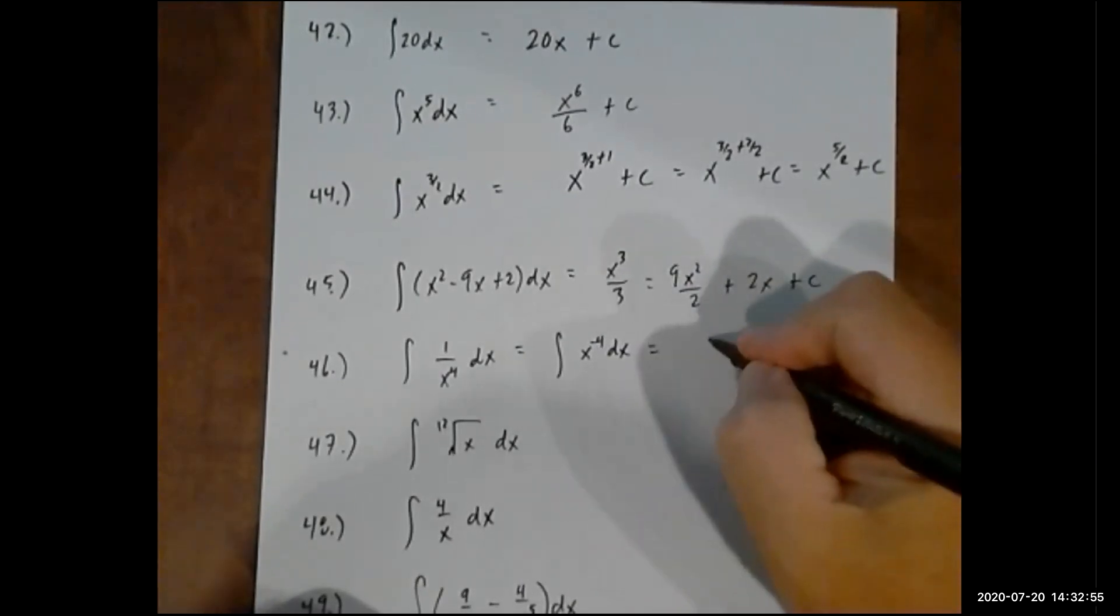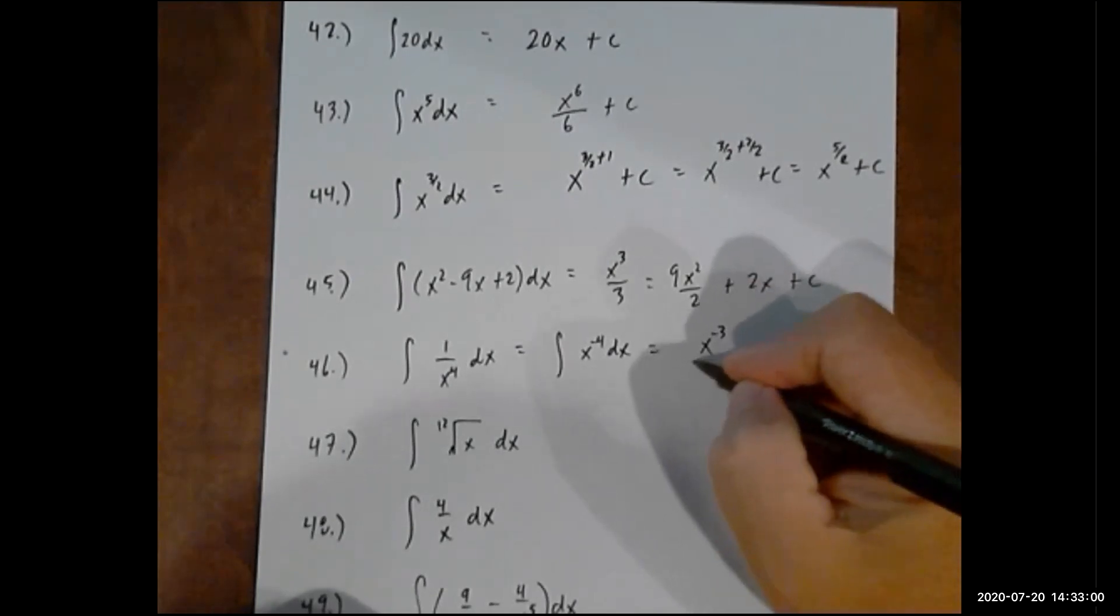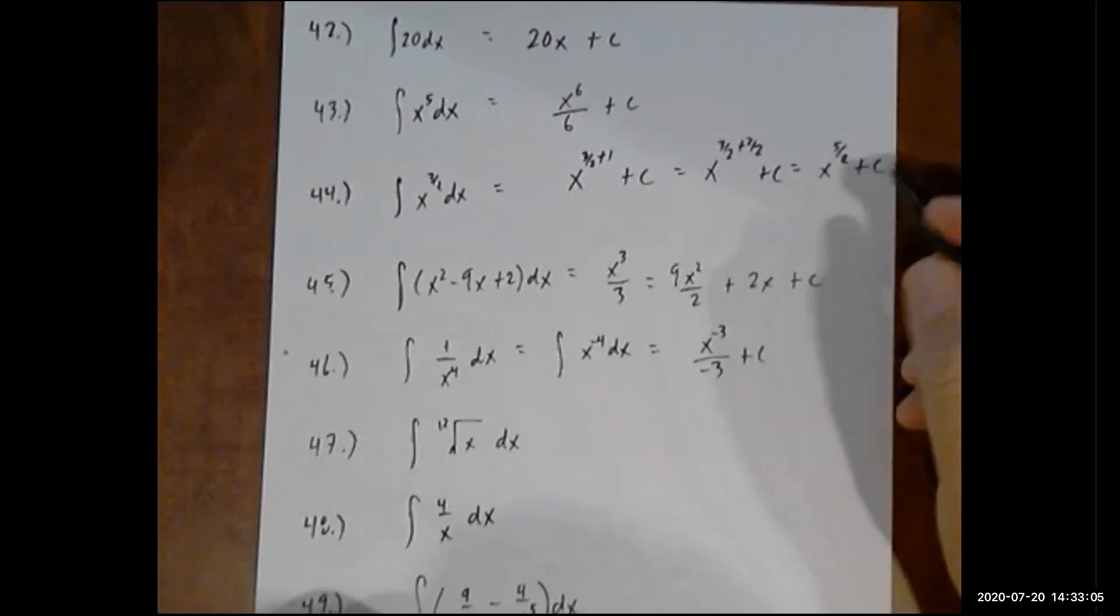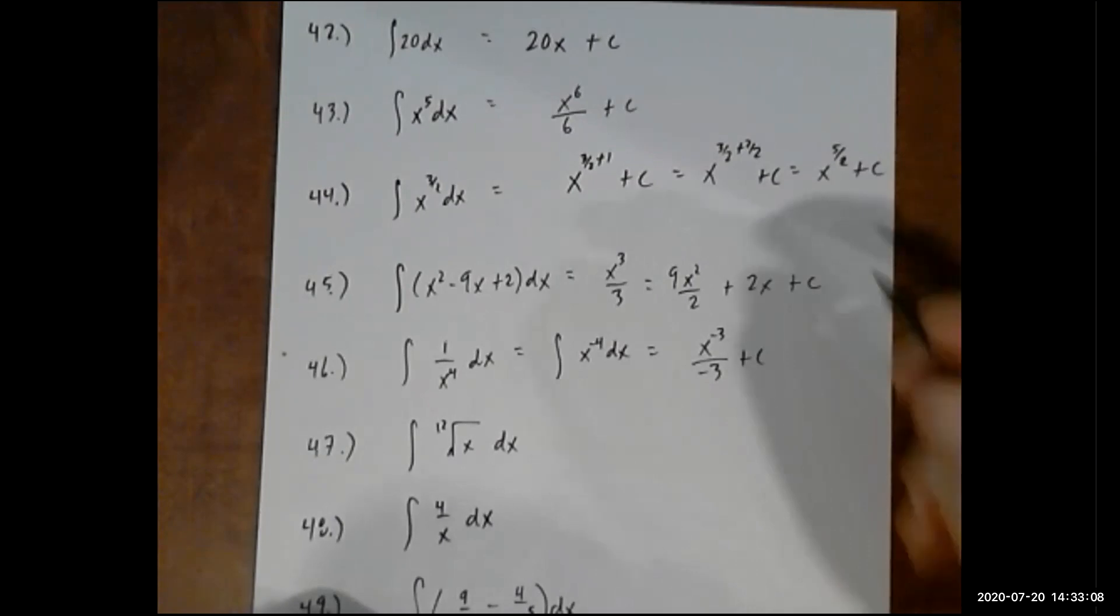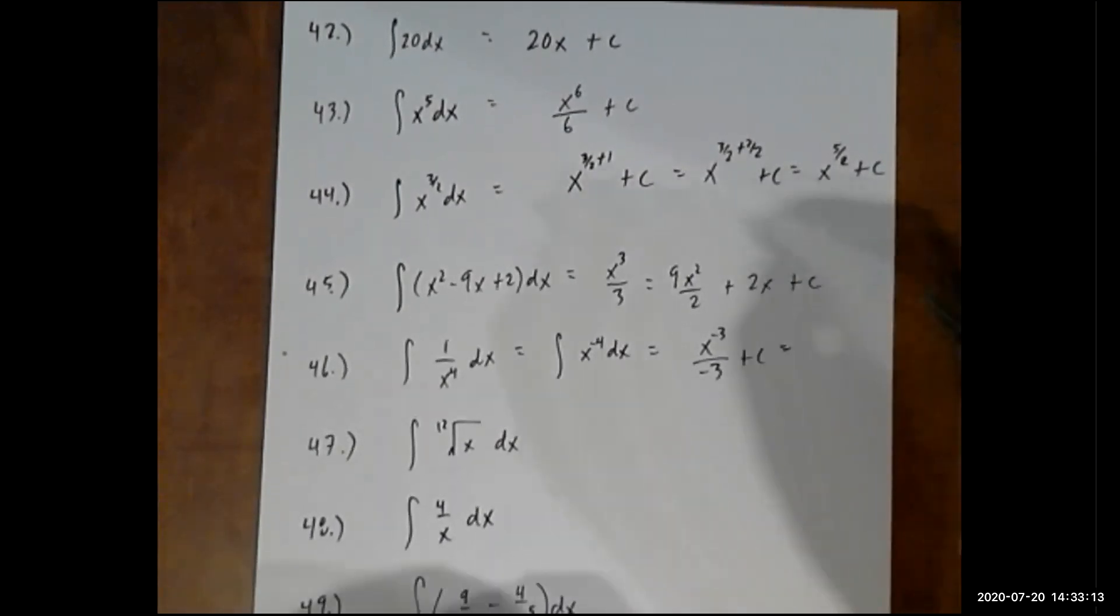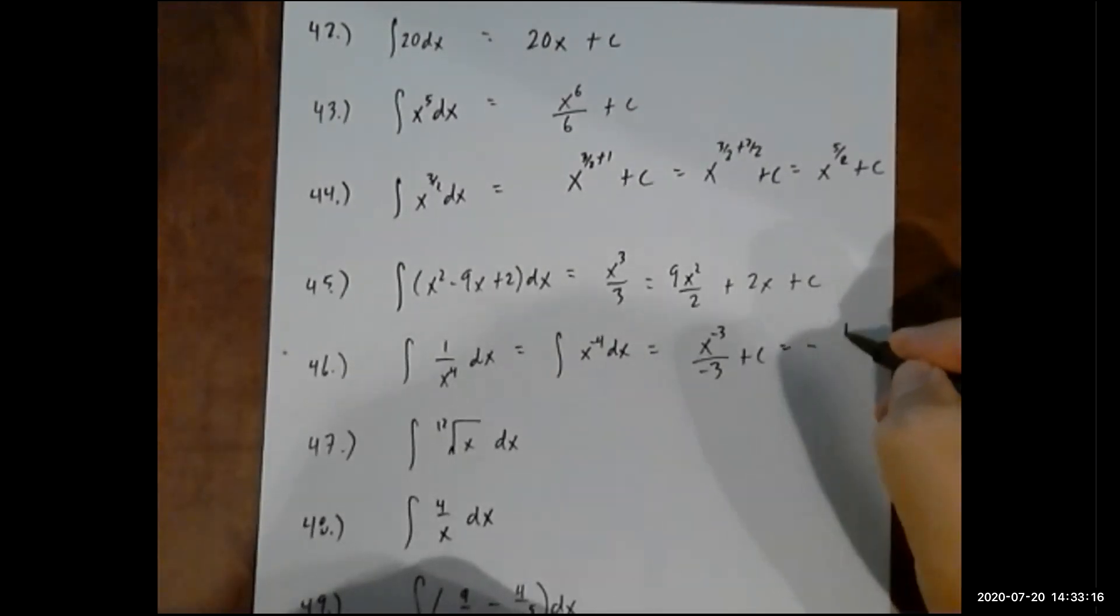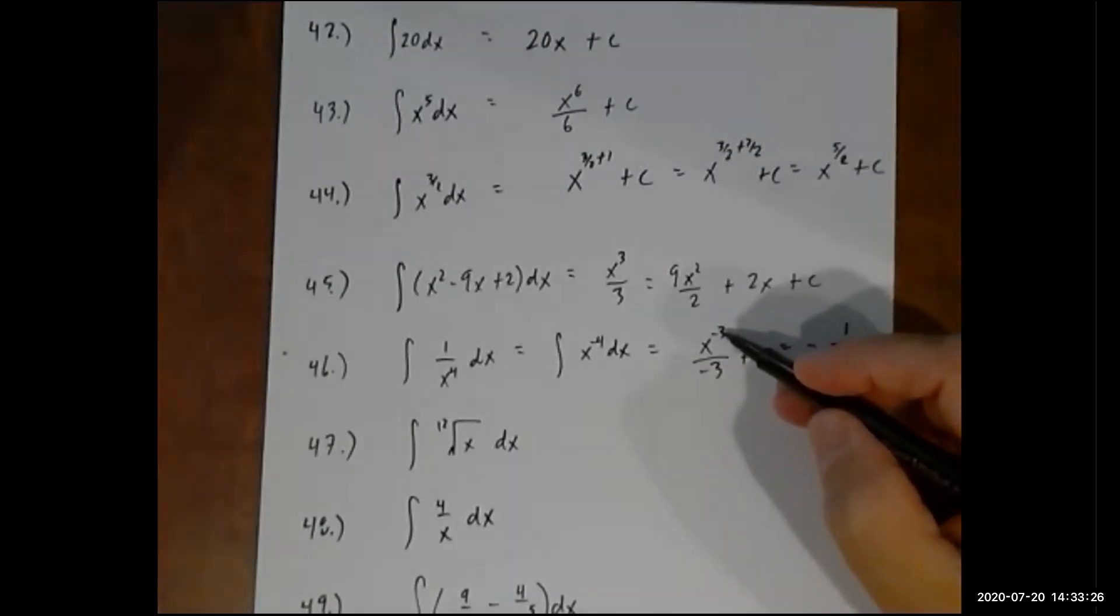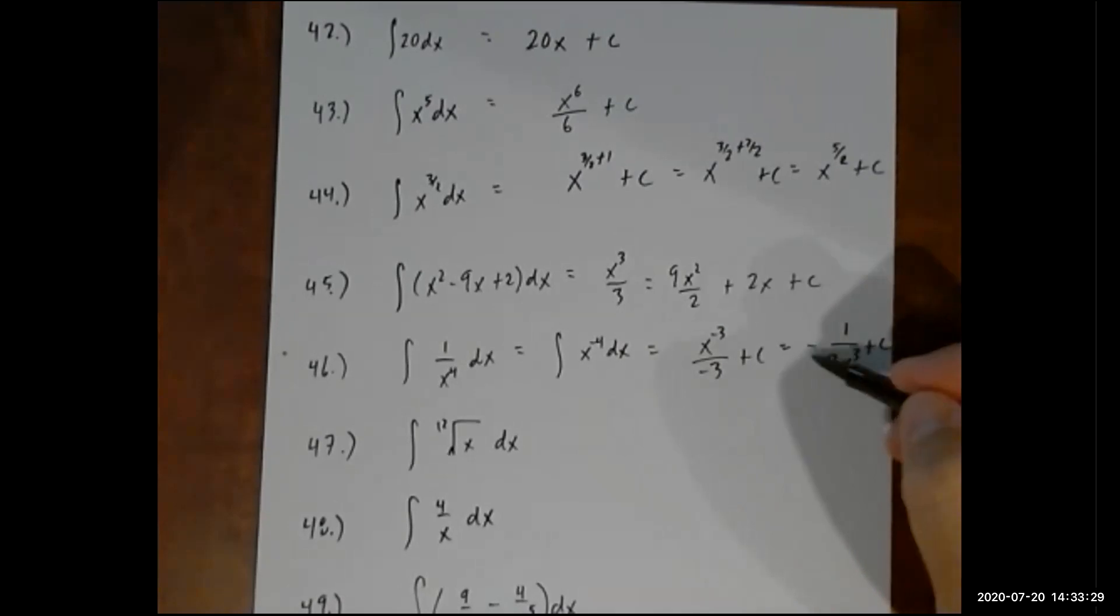Now we can apply the power rule. I'm going to add 1 to this. So in this case, if you add 1 to negative 4, you get negative 3 over the new exponent. Now, if we wanted to, normally we don't leave a negative exponent in the answer. So a lot of times you may see this answer written like this, where you move x to the minus 3, you make the exponent positive, it goes to the bottom. I just moved the negative out front. The 3 is still in the bottom.